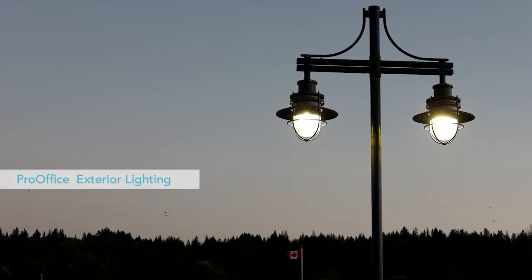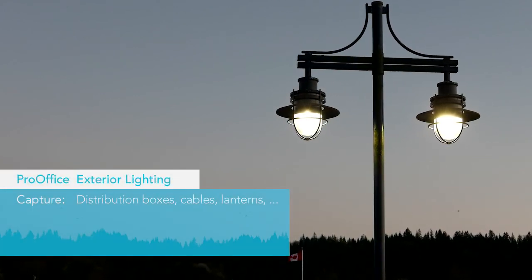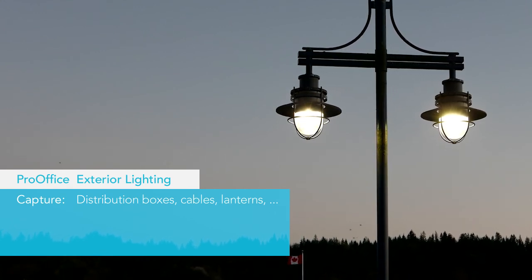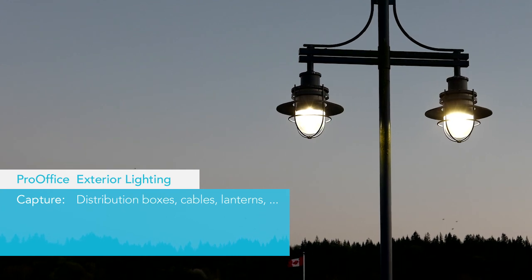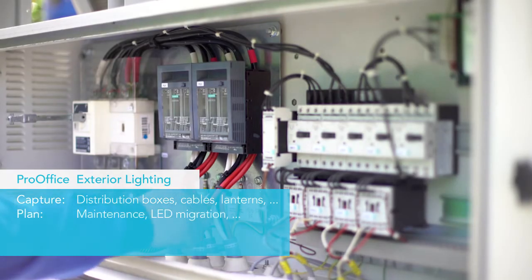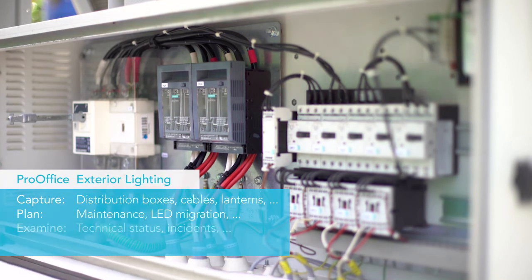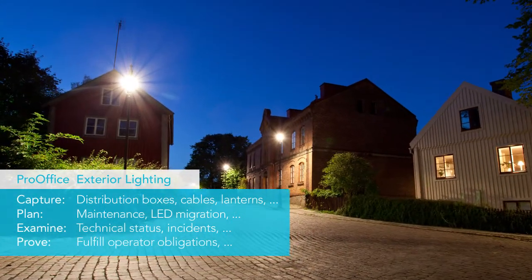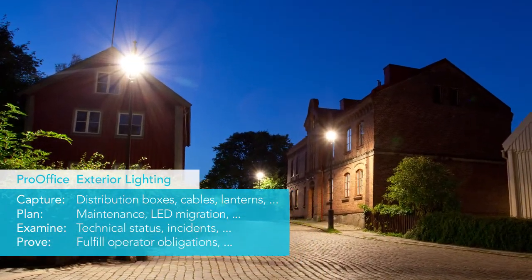Last but not least, an example that highlights street lighting. After initial data gathering, you have an information system covering localized distribution boxes, cables, lanterns, and even bulbs. Stay current on maintenance, make your LED migration plan, check the technical and aging status of your inventory, and manage incidents. Make use of an integrated asset ledger to fulfill your legal operator obligations.